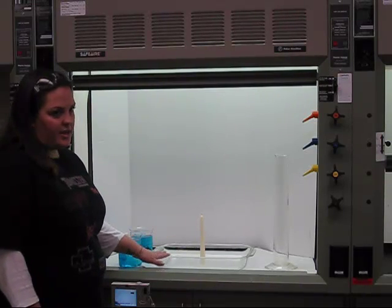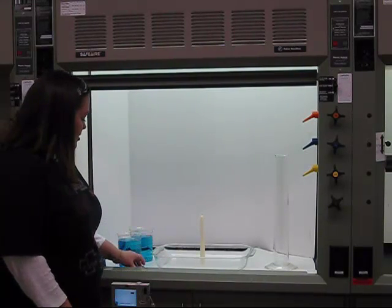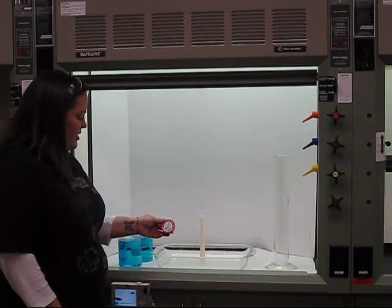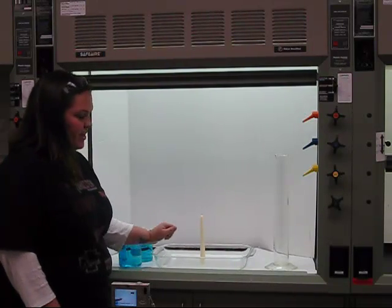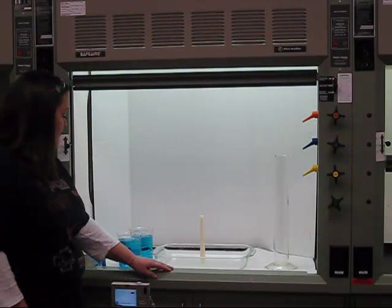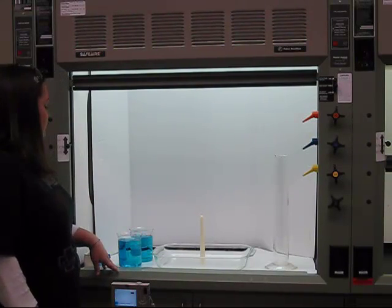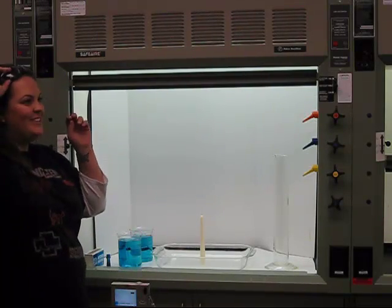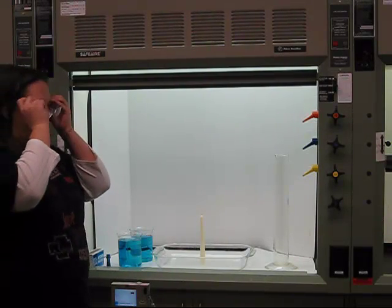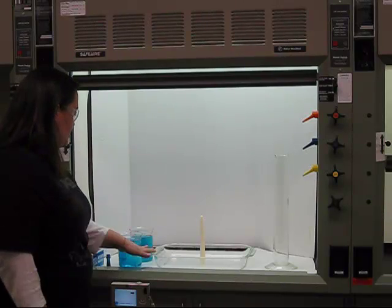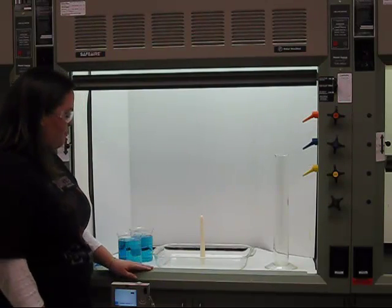So we just start with a baking dish and a tapered candle, and we use stick-em candle adhesive to stick to the bottom of the candle to make it stand up. We've already put some food coloring into about 1,400 milliliters of water. We're just going to add it to about three-fourths of the way of the baking dish.